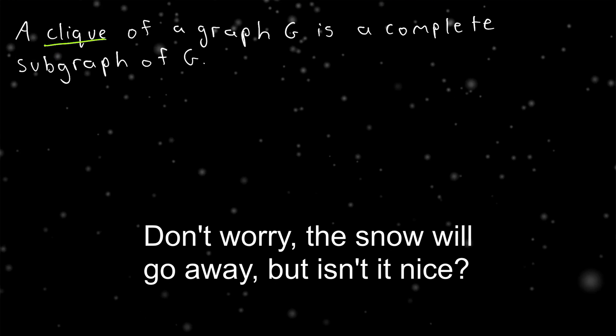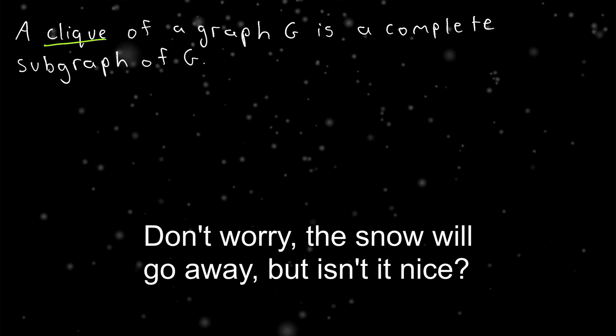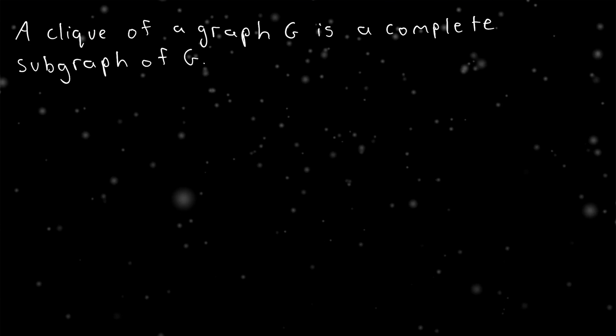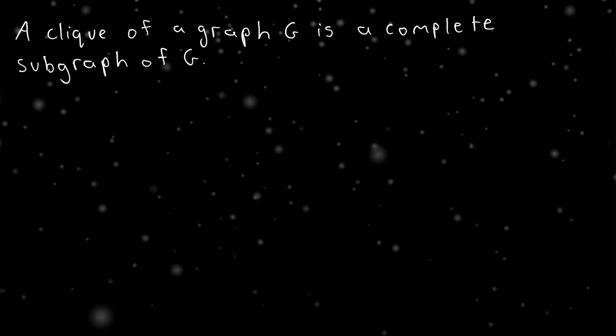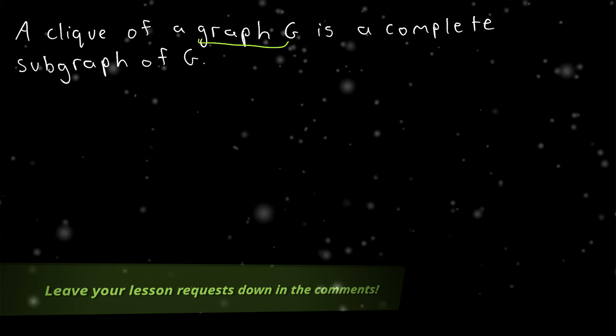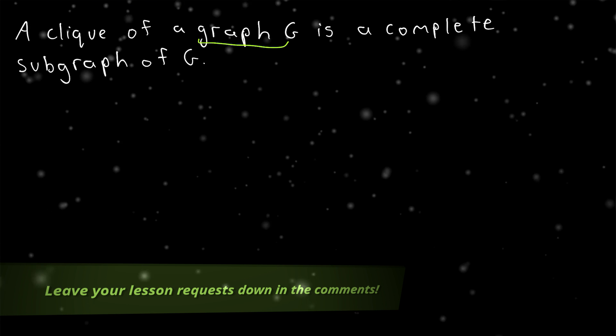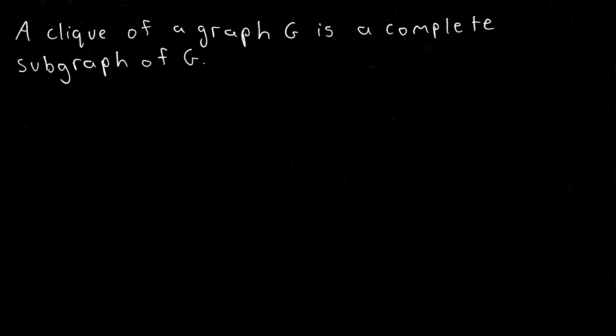We're all familiar with the definition of a clique in a graph. A clique of a graph G is a complete subgraph of G, or it may also be defined as a subset of the vertex set of G, such that any two vertices in the set are adjacent in the graph.